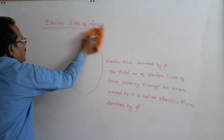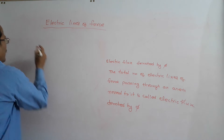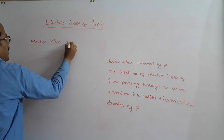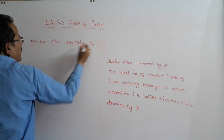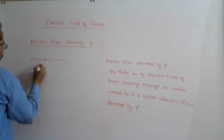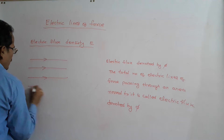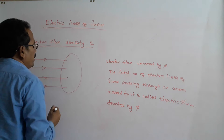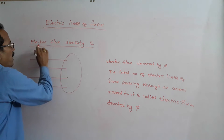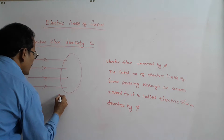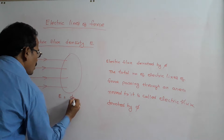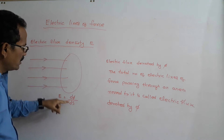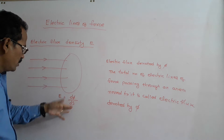What is electric flux density? Electric flux density is denoted by E. It is the total number of electric lines of force passing through unit area normal to it. Electric flux density E is equal to dφ by ds, where dφ is the total number of electric lines of force and ds is the area.